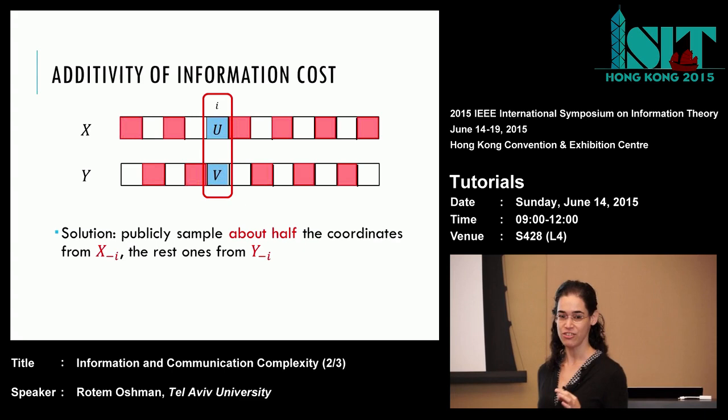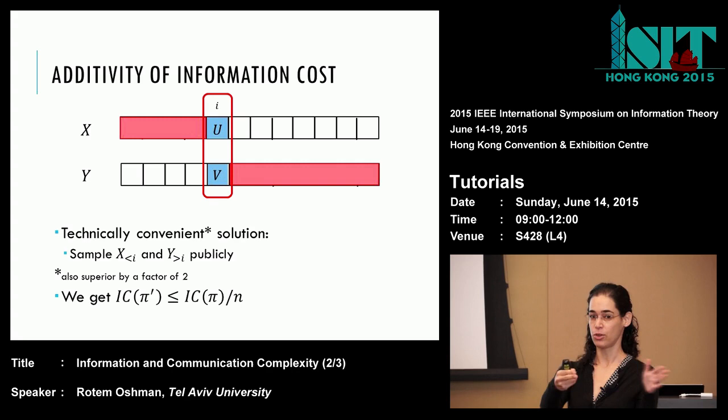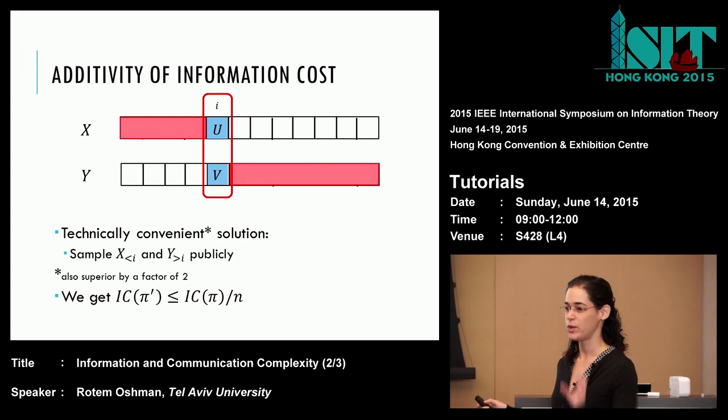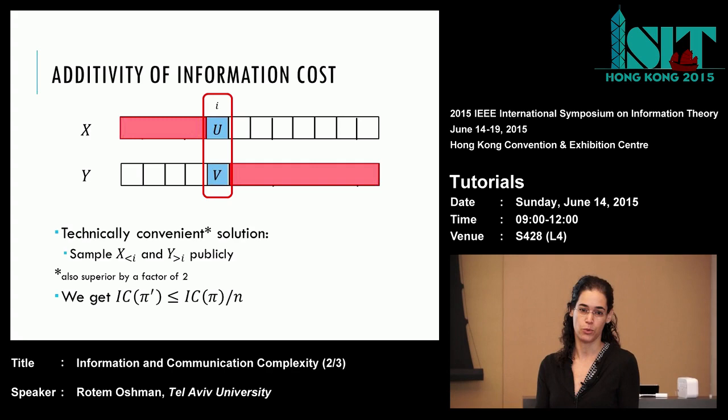Technically, the most convenient way to do it is: this is our special coordinate where we put the actual input. Sample everything before this coordinate — sample all of x publicly there. Sample all of y publicly after this coordinate. In expectation, this will be half of the inputs for x and half of the inputs for y. This also saves you a factor of two if you do the math. It's then easy to prove that when you do the embedding this way, you're really leaking only 1/n the information cost of the protocol.